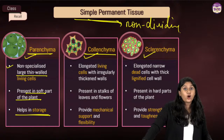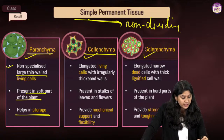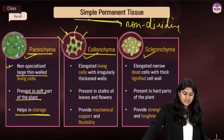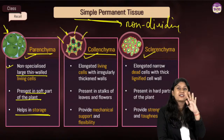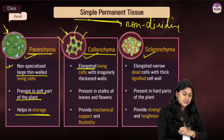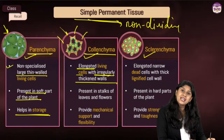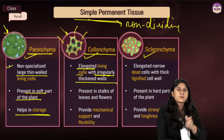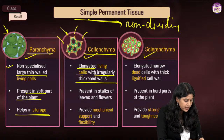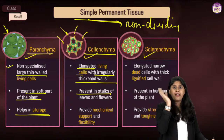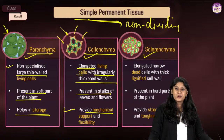Then we have colenchyma — a very specialized type of cell with a special structure. They have thick corners, are elongated, and are living cells with irregularly thickened walls. They are present in the stalks of leaves and flowers and play a very important role in providing flexibility and support to the plant.